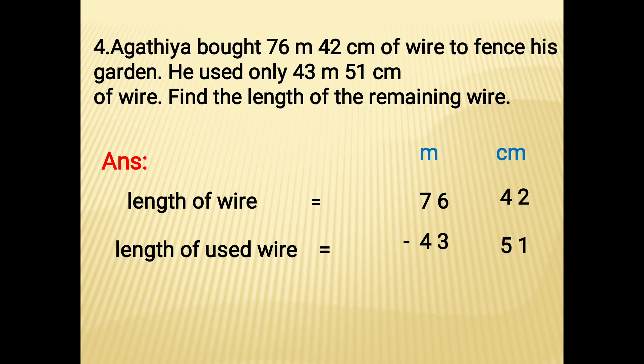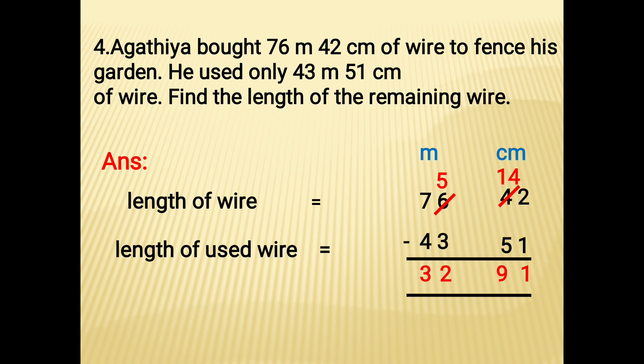Now subtract. In centimeter, 2 minus 1 is 1. 4 minus 5 - we need to do borrowing. So 6 becomes 5 and 4 becomes 14. 14 minus 5 is 9, 5 minus 3 is 2, then 7 minus 4 is 3. Therefore the remaining length of the wire is 32 meter 91 centimeter.